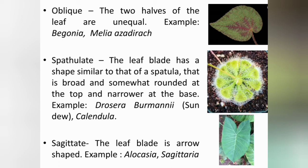Spatulate leaves: the leaf blade has a shape similar to that of a spatula — broad and somewhat rounded at the top and narrower at the base. E.g., Drosera burmanii.